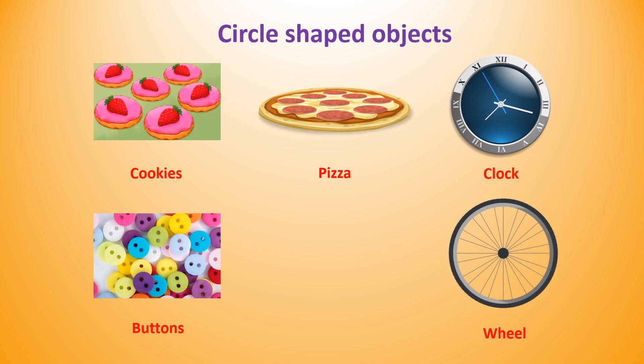Surely, in variety of objects we can find a shape of a circle. For example, cookies, pizza, clock, buttons and wheels. These all objects represent a circle shape.